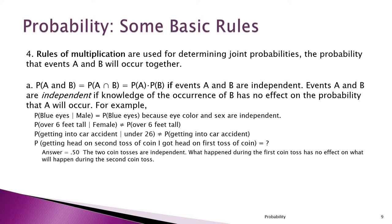The rules of multiplication are used to compute joint probabilities — the probability that event A and event B occur together. In the specific case where two events are independent of each other, meaning knowing something about one having occurred doesn't change the probability that the other occurred, then we just multiply the probabilities.